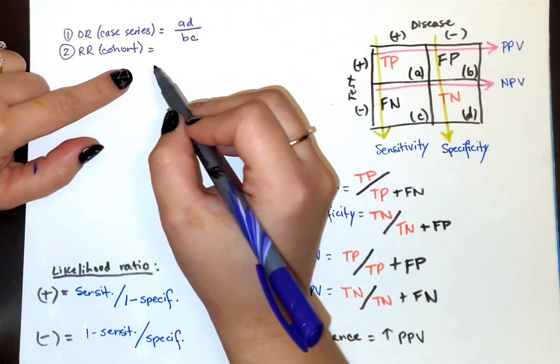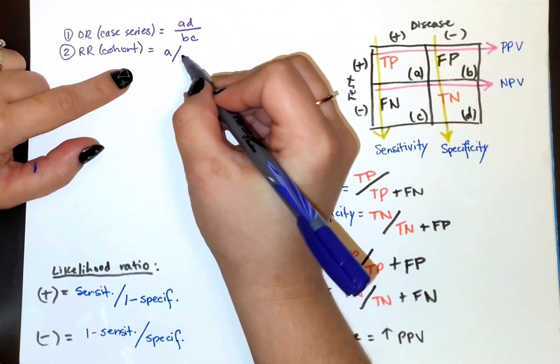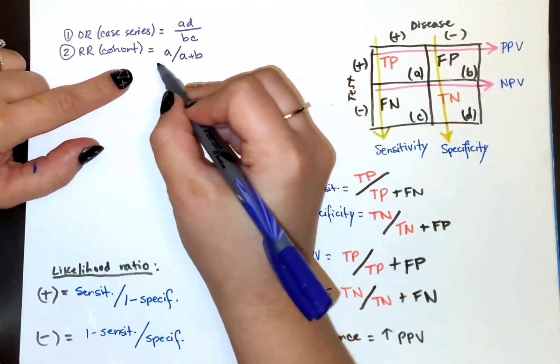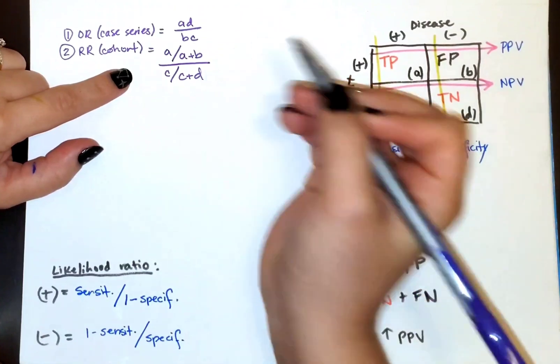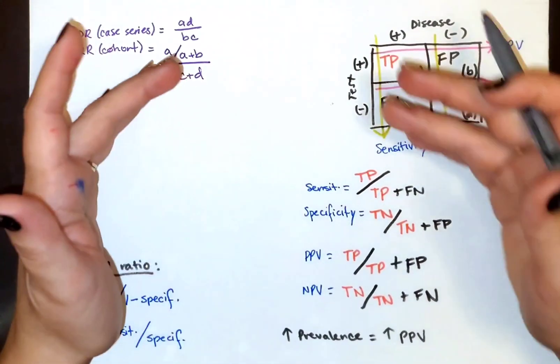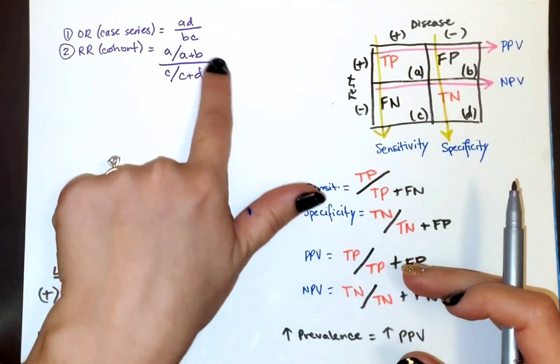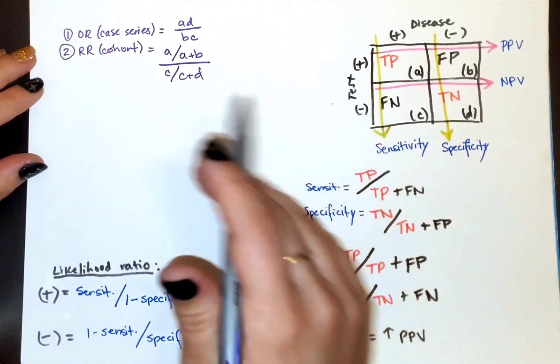For cohort, we are going to do a over a plus b divided by c over c plus d. Now I know this is a lot, but once you get this, everything else is going to be a derivative of basically this equation. So stay with me, just kind of memorize that one.